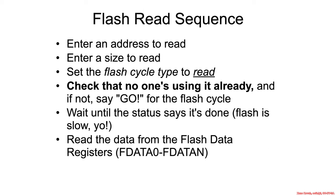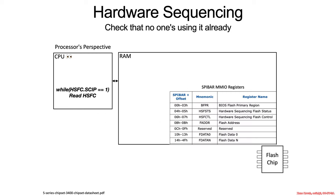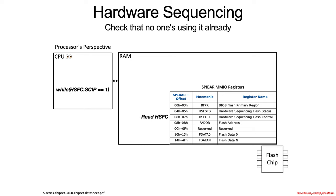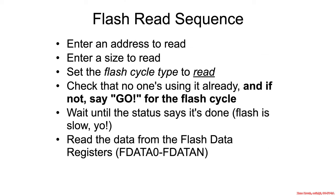Check that no one's using it already. While hardware sequencing flash control dot cycle-in-progress is equal to 1, read the hardware sequencing flash control register and check whether cycle-in-progress is still equal to 1. Just keep looping back and forth checking if it's 1.